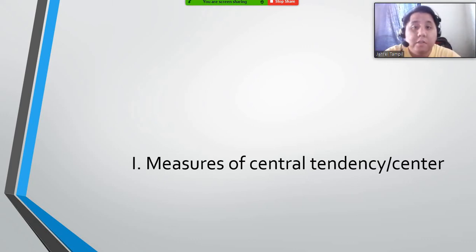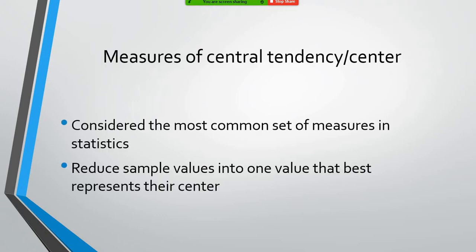Let's now look at our different numerical descriptors. The first measure that we will look into is the measure of central tendency or the measure of center. The measures of central tendency or the measures of center are considered to be the most common set of measures in statistics. They reduce sample values into one value that best represents their center.